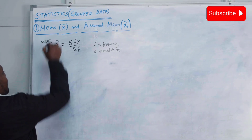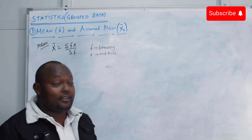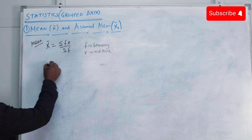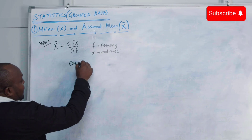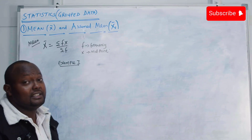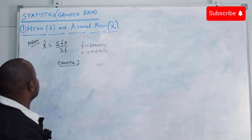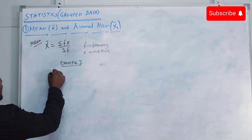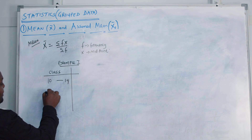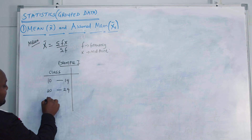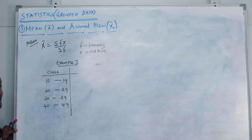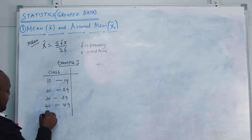To calculate the mean you need the total of fx and the total of f. Let's solve this using an example — the same example we are going to use to calculate the mean using the assumed mean, so we can see how they are related. Let's say we have classes: 10 to 19, 20 to 29, 30 to 39, and 40 to 49.